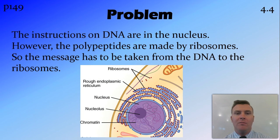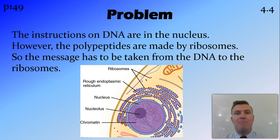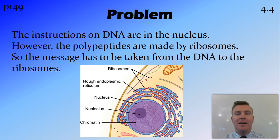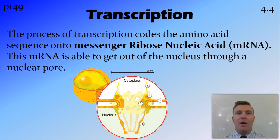Now the problem with this method of synthesis is that the instructions are on the DNA, which is found inside the nucleus, but the thing that actually makes the polypeptide — the ribosomes — are found either out in the cytoplasm or in the rough endoplasmic reticulum. So this means that the message needs to be taken from the DNA out to the ribosomes, where the polypeptide is created. And the way we get around this is through transcription and translation.